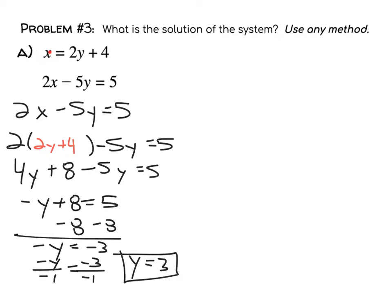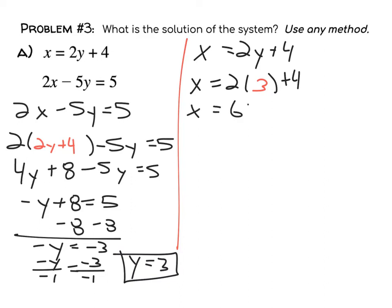So substitution was the best one to do on that because of this already solved for x bit. I won't do the proofs, but I'll finish this problem so you can find the solution. Take the first equation, x equals 2y plus 4, and substitute y equals 3. So x equals 6 plus 4, or x equals 10. Our ordered pair solution is 10 comma 3.